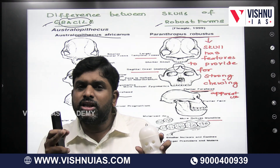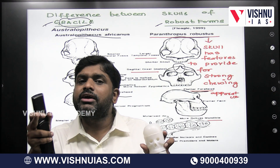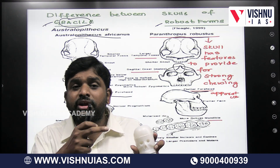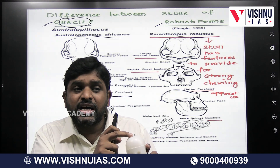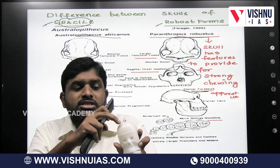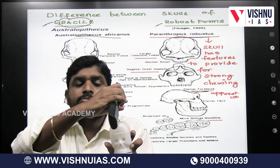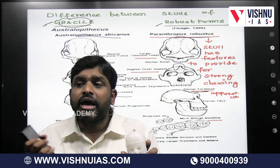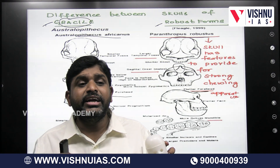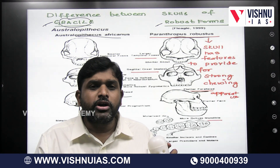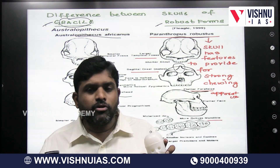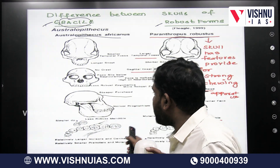From this, we came to a conclusion that the Gracile variety might have evolved into modern man. The Robustus variety has a Sagittal Crest — this bony ridge-like eruption. We do not have a Sagittal Crest; hence, we conclude that the Robustus variety did not evolve into modern man, but the Gracile variety did evolve into modern man.